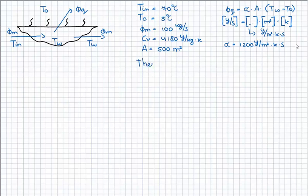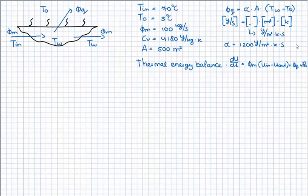Now I will use the thermal energy balance to determine the temperature of the bath. The equation is dU/dt equals Vm times the difference in internal energy, plus the heat flux, plus the production of internal energy. To calculate T_w, we assume steady state, so dU/dt is zero. Also, there is no production of internal energy inside the bath, our control volume, so that term is also zero.